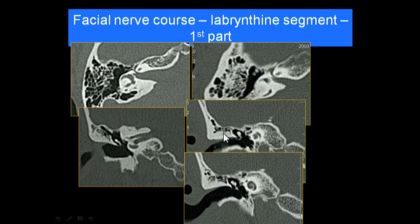Coming back anteriorly, you can see the geniculate ganglion where the nerve turns. The cut is done at this level — you can see it coming anteriorly and then turning back. On the coronal plane, when it's turned back you will see two 'eyes' like a cobra: one is the beginning of the horizontal part, and the other is the end of the labyrinthine part. Going slightly posteriorly, you can see the horizontal part extending into the middle ear cavity.